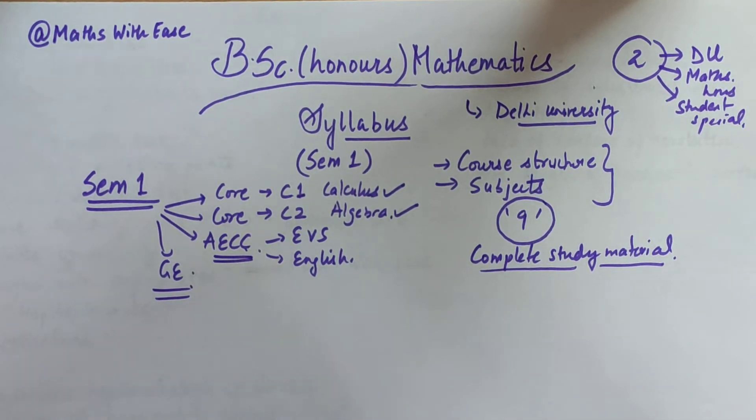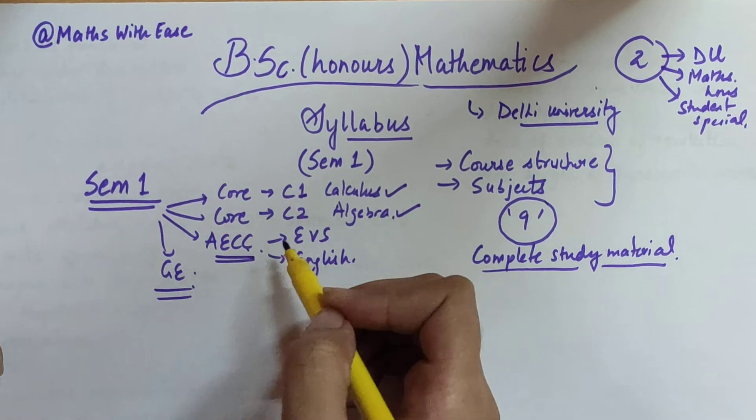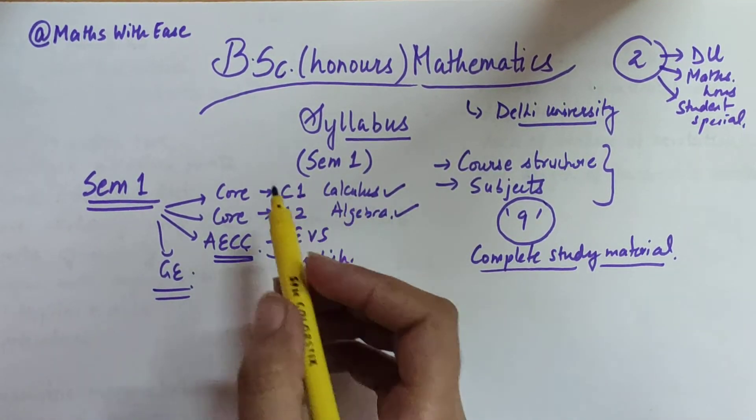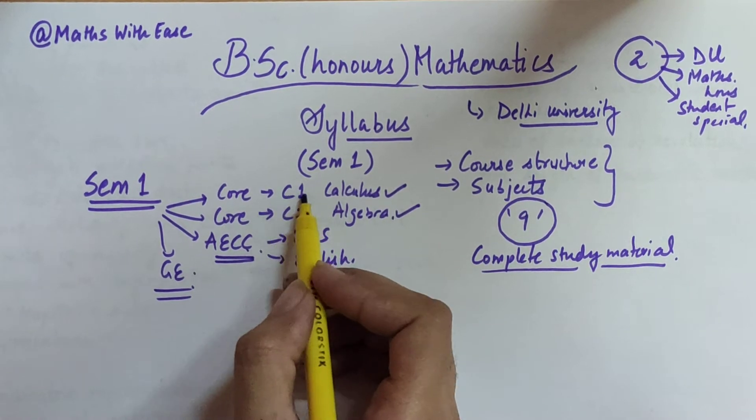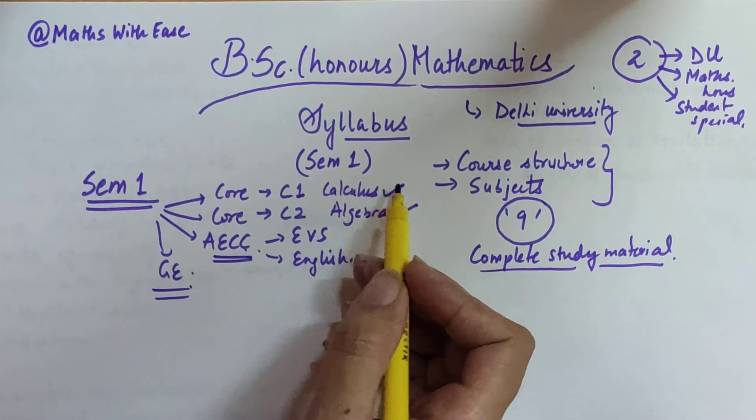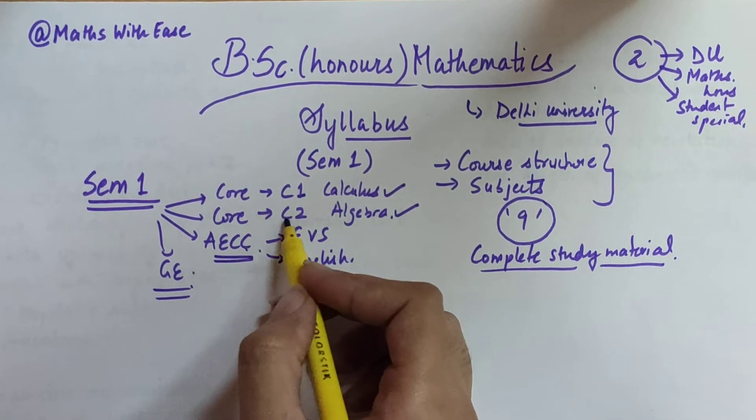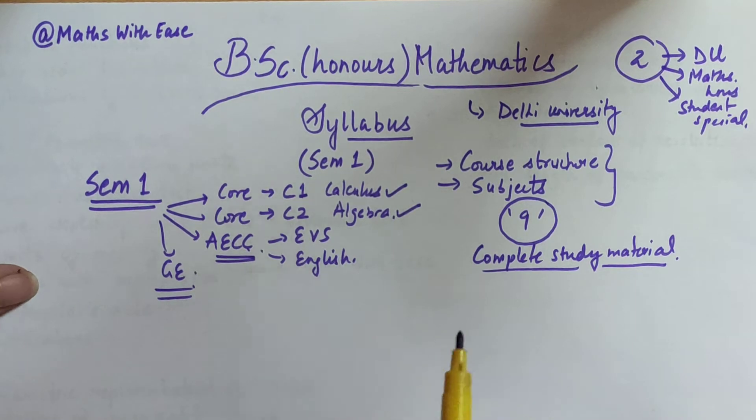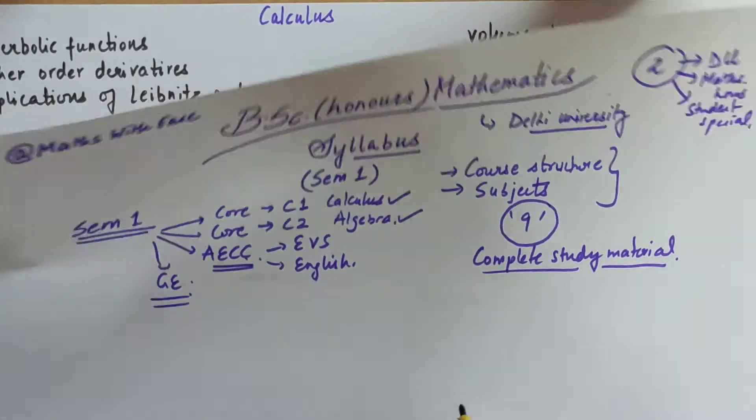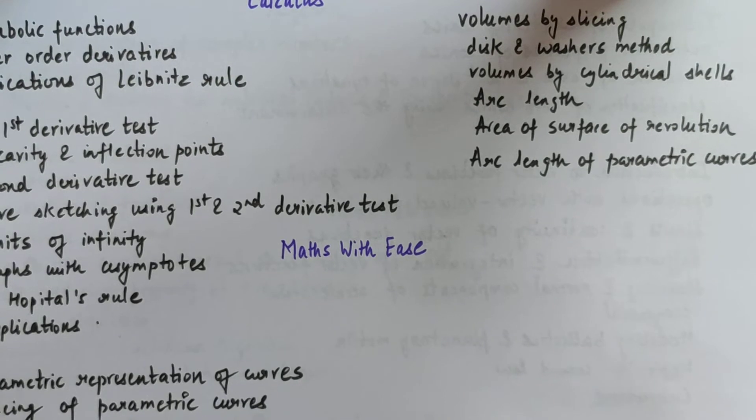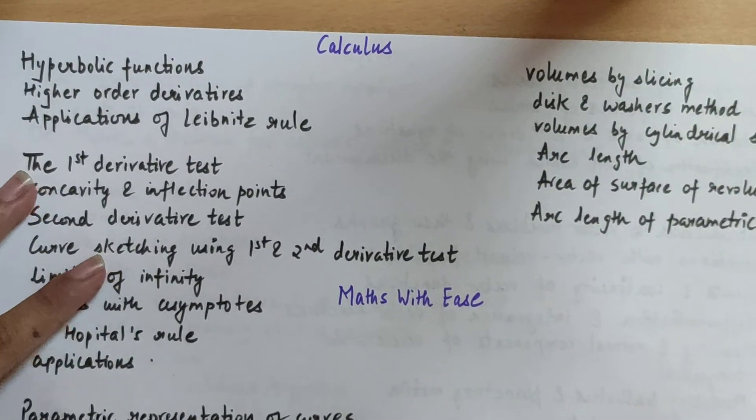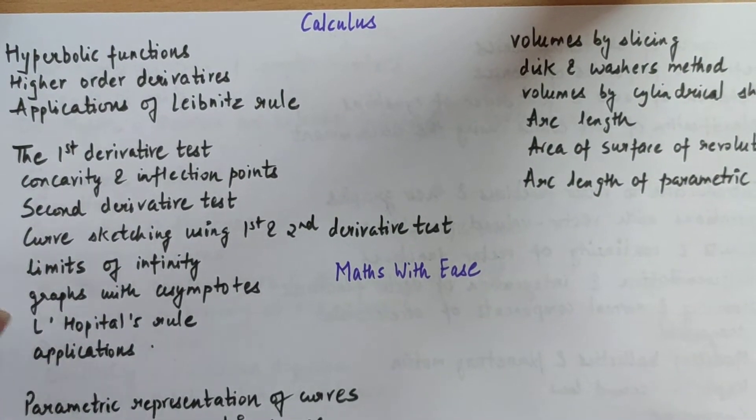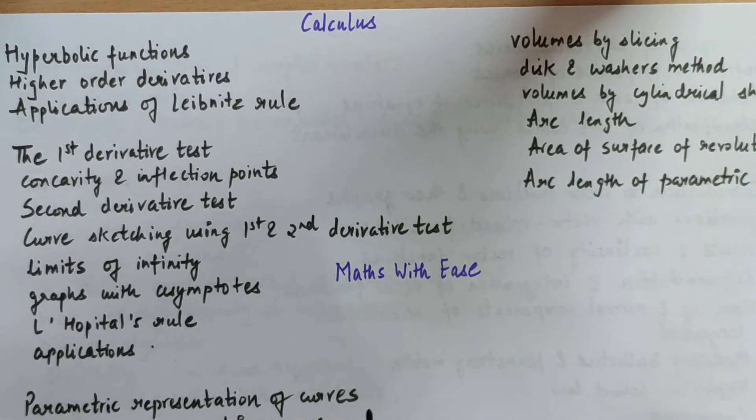Now let's come back to our video. AECC is done and GE is done. Coming to the core subjects, your first core subject is C1, that is Core 1, which is Calculus, and the second core subject is C2, that is Core 2, Algebra. These Calculus and Algebra core subjects need to be studied by all students. Therefore, in this video we are going to cover the syllabus of these two in detail. I have already discussed the structure and subjects in previous videos.